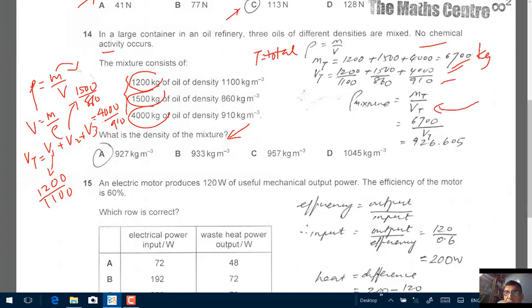The numerator you know is 6700. I repeat. To find the density of the mixture, the numerator you know is 6700. The denominator, you just have to use a calculator and work this number out. Use a calculator and work this number out. Plug the numbers in and you'll get 926.605 as the density, that will be kilogram per meter cube. Closest answer is A, 927 kilogram per meter cube.